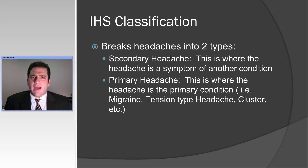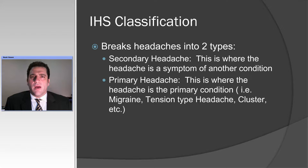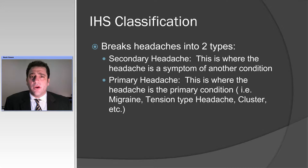Just a little bit of background about headaches in general. The International Headache Society breaks headaches into two subtypes: secondary headaches, where the headache is a symptom of another condition, and primary headache, where the headache itself is the condition — for example, migraine, tension-type headache, cluster headache, and so forth. The International Headache Classification was originally done in the mid-80s under Jan Olesen from Denmark and was revised in 2003, also under Jan Olesen. They are in the process of creating the next edition as well.